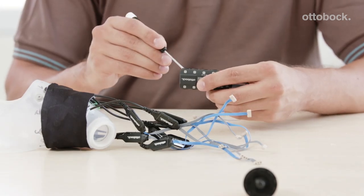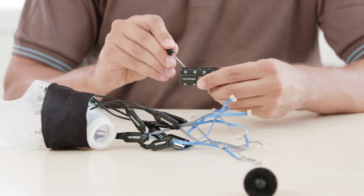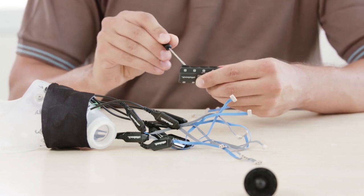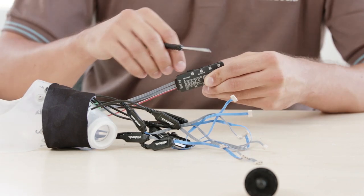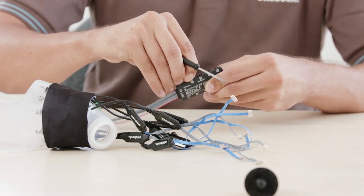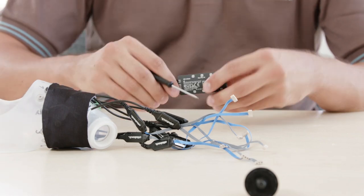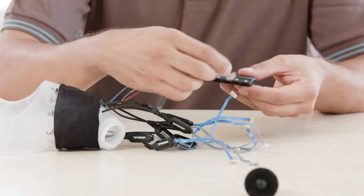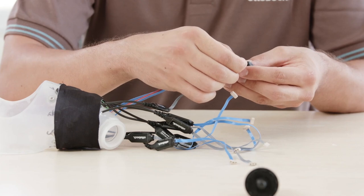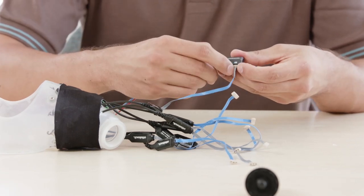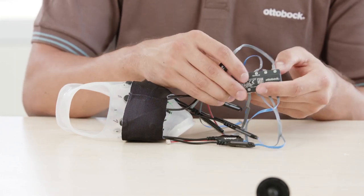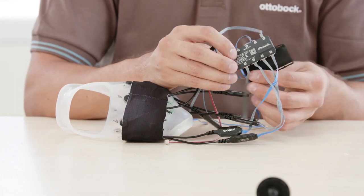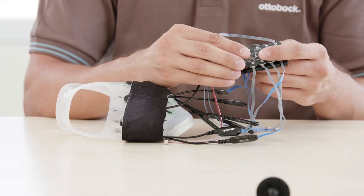Now remove the covers of the Myo Plus TR from the required inputs. Do not remove the red cover of slot A. This slot must not be used. Then connect each electrode cable to the corresponding slot. Pay attention to the correct wiring. In addition, secure the cables with the cable protection.